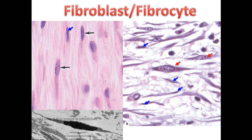Looking at a real picture, the red arrow indicates fibroblasts because they have a large nucleus with euchromatin, while the blue arrow indicates fibrocytes. You can also see an electron microscope picture of a fibrocyte, again with a spindle shape and heterochromatin nucleus.